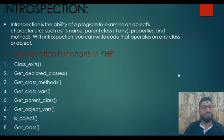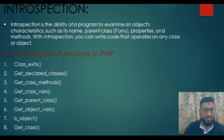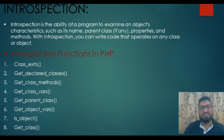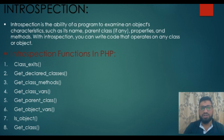The next topic we have is introspection. Introspection is the ability of a program to examine an object's characteristics such as its name, parent class if any, properties and methods. With introspection, you can write code that operates on a class or object. Basically, introspection allows us to identify the characteristics — name, parent class, properties, and methods — and understand their behavior.